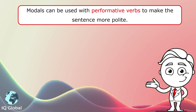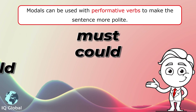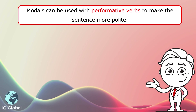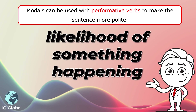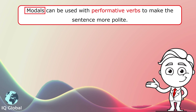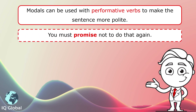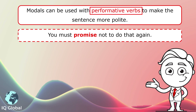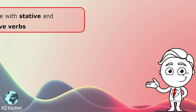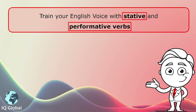We also use modal verbs such as must, could, and should — words that give us the ability or the likelihood of something happening. We use modals with performative verbs to make the sentence more polite and formal. For example: you must promise not to do that again. The modal verb is 'must' and the performative verb is 'promise.' And that's how we use stative and performative verbs.